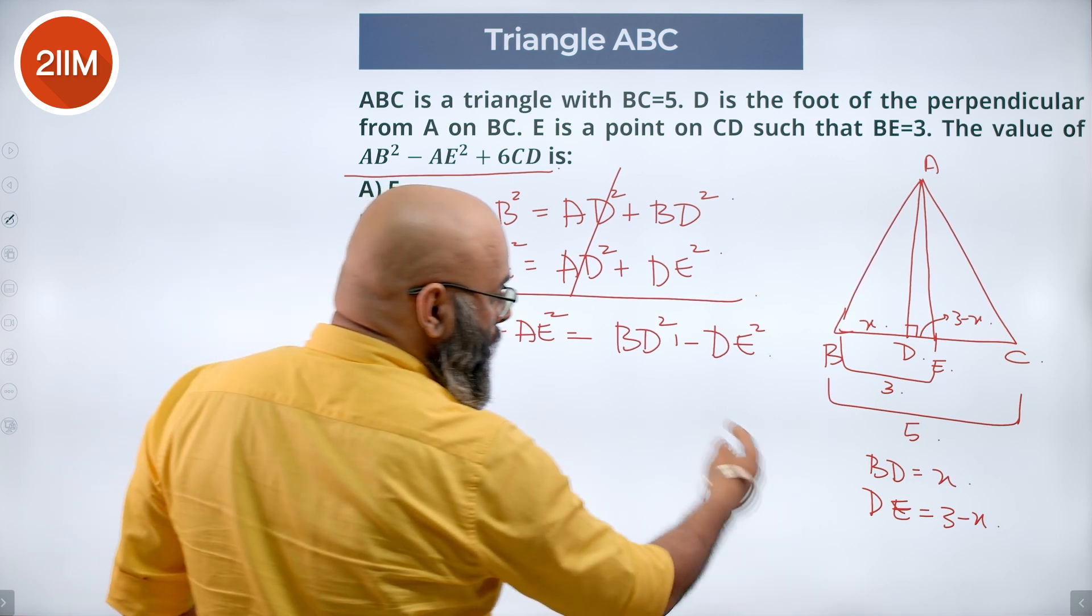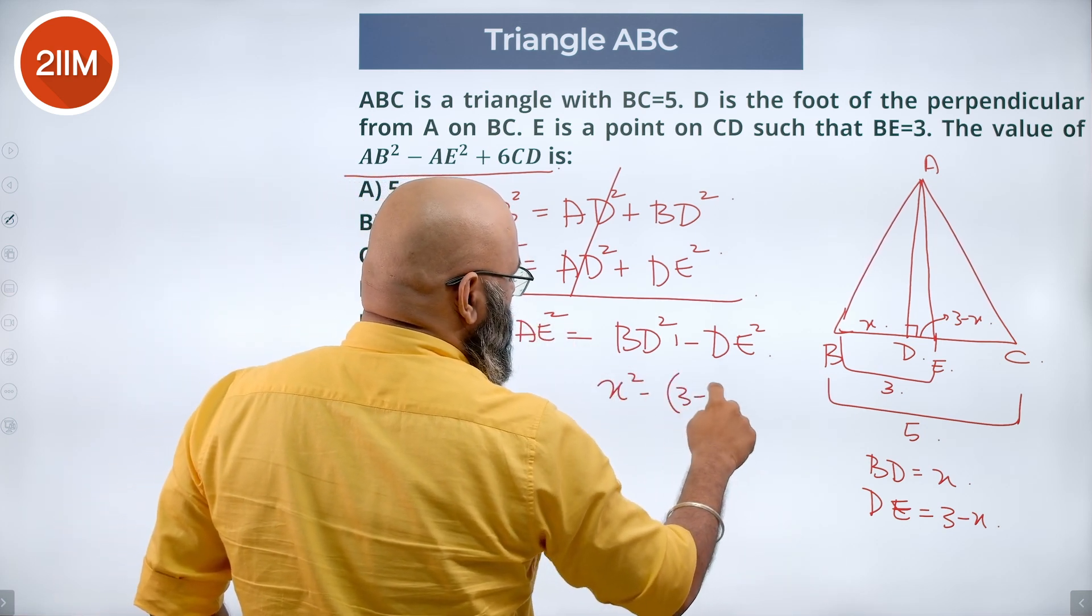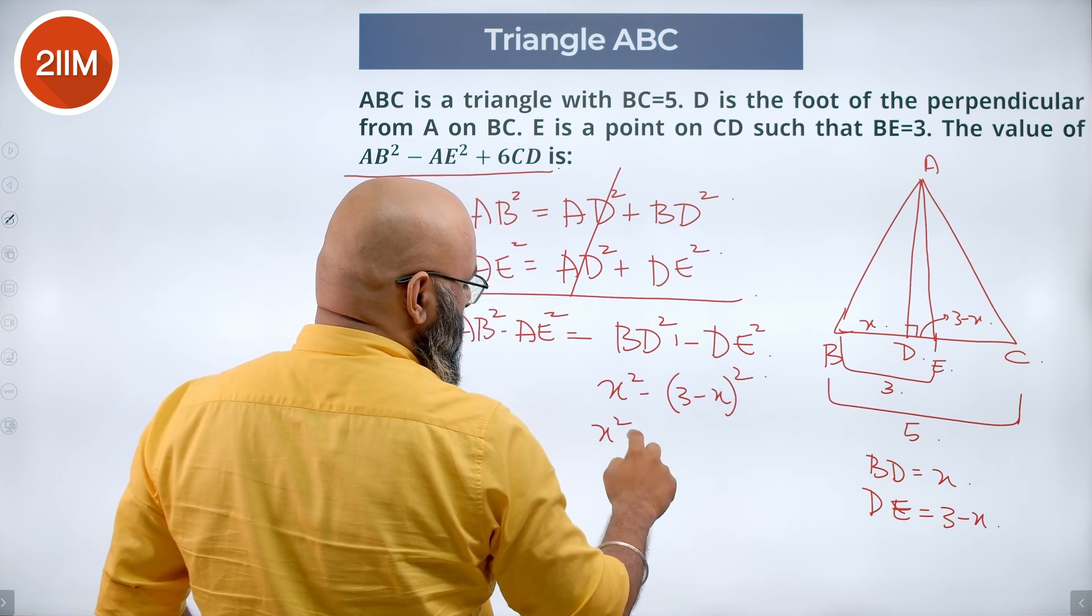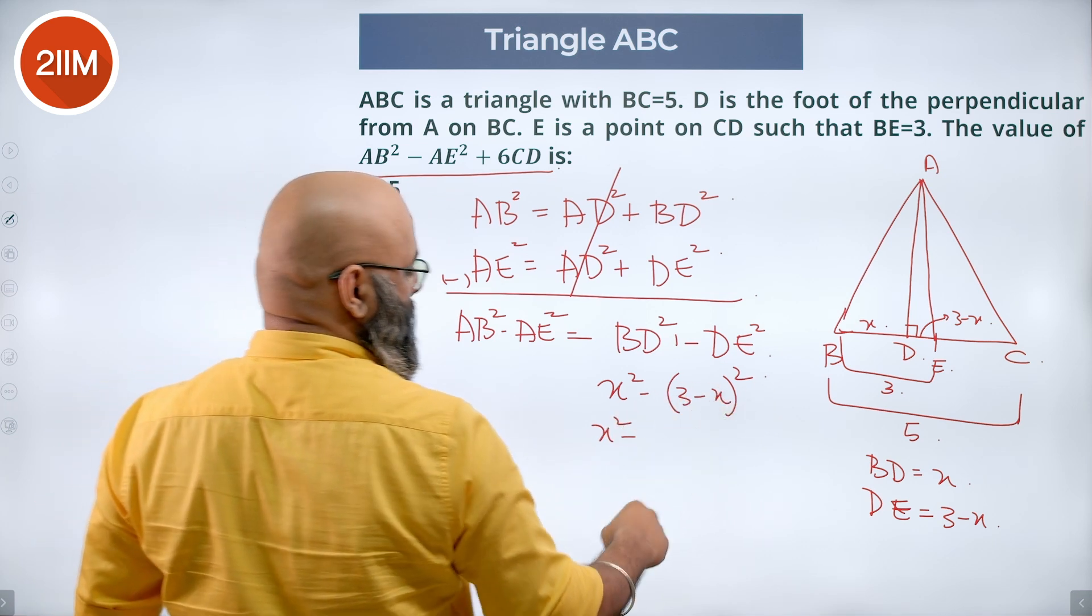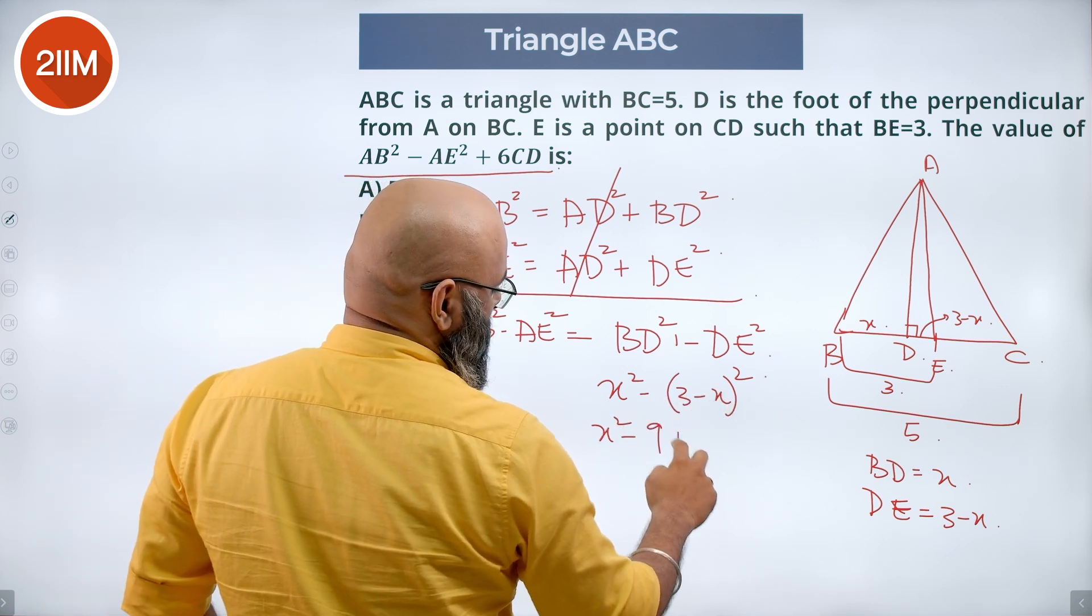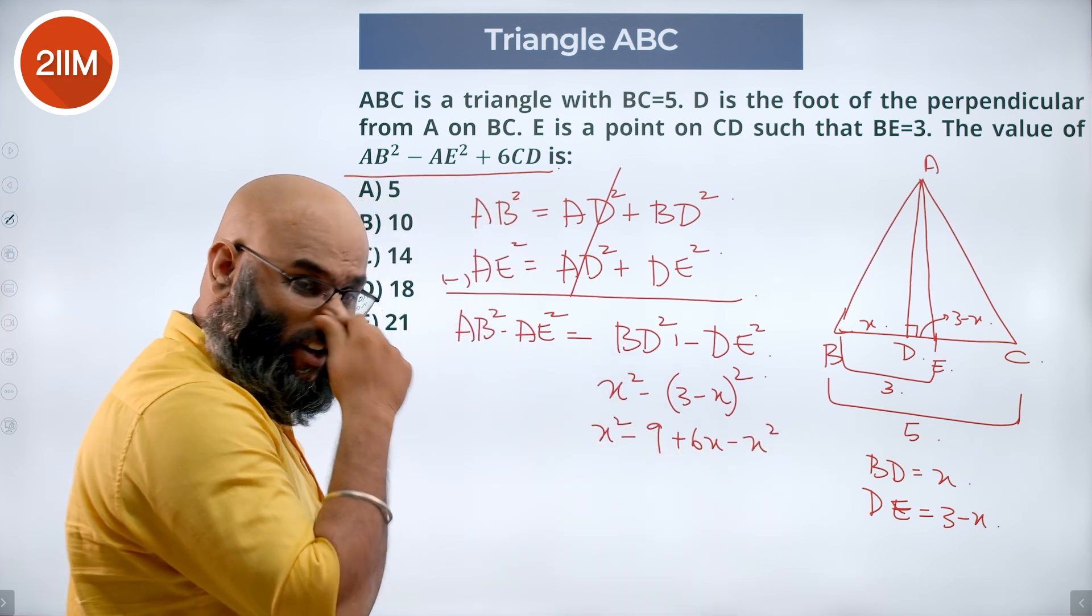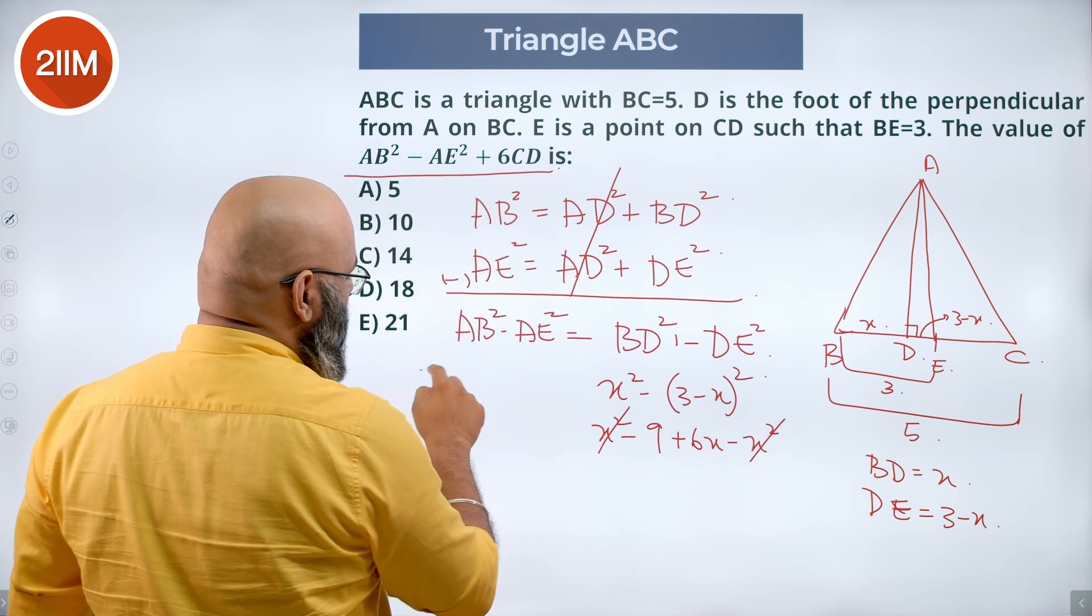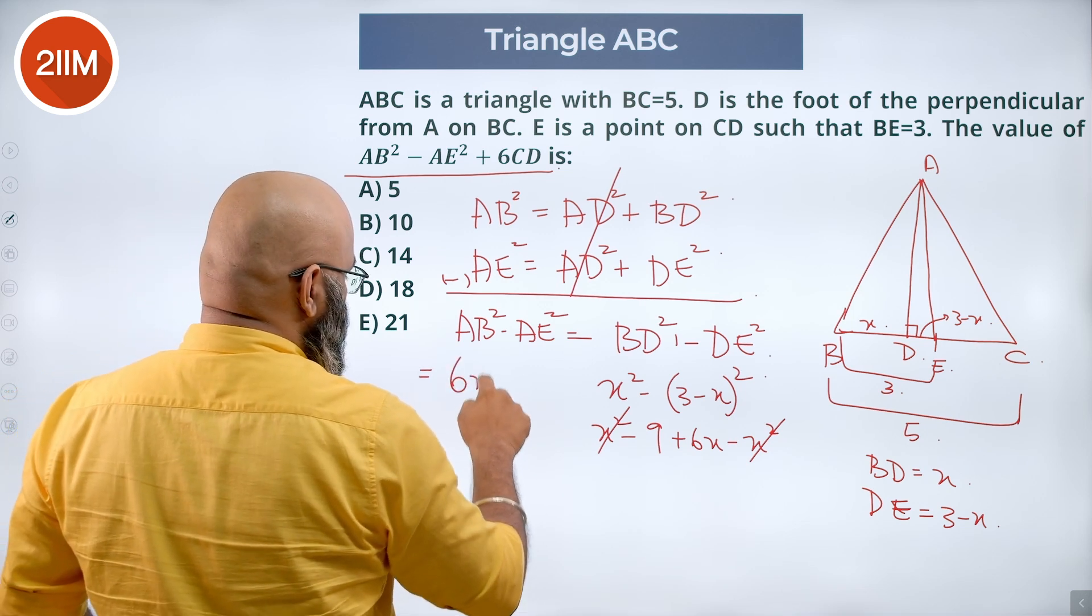Now we substitute this value over here. We get X square minus 3 minus X the whole square. So you solve for it, you get X square minus 9 minus 6X plus X square. We will have minus 9 plus 6X minus X square. So X square minus X square goes off. So we are left out with AB square minus AE square as 6X minus 9.